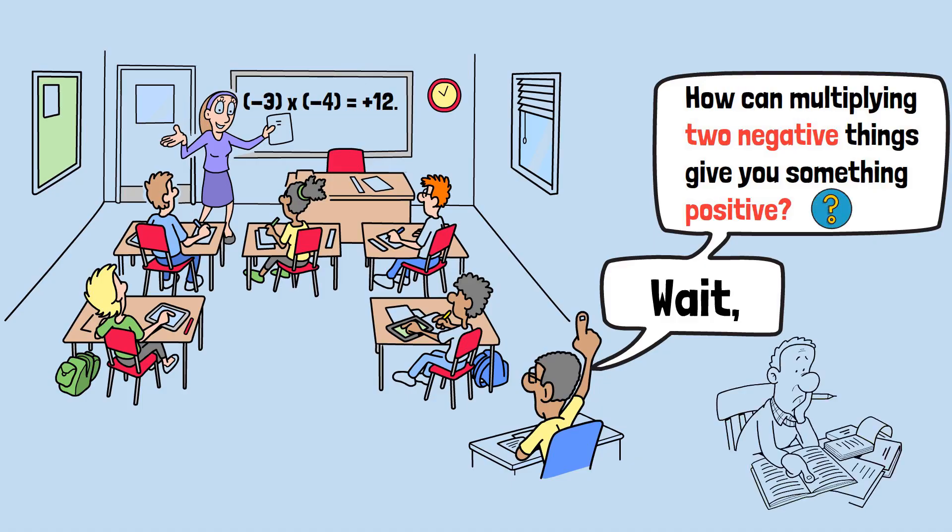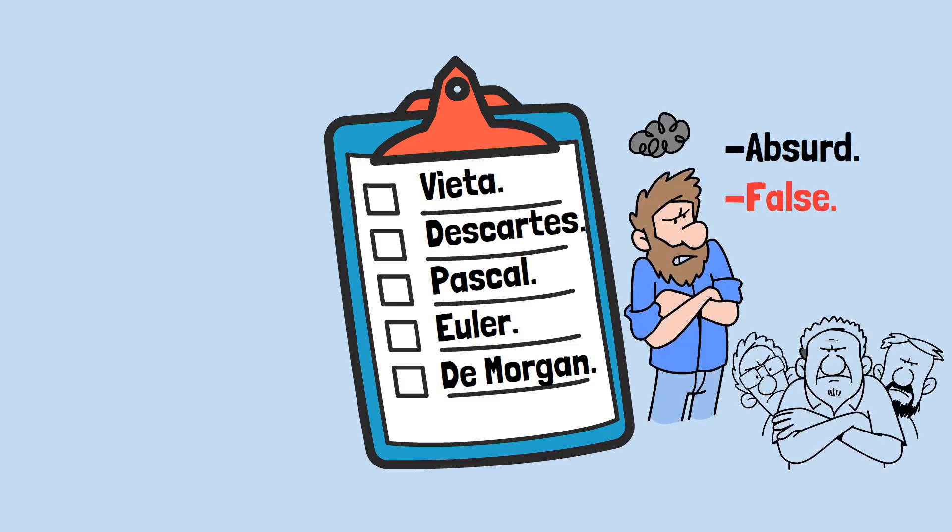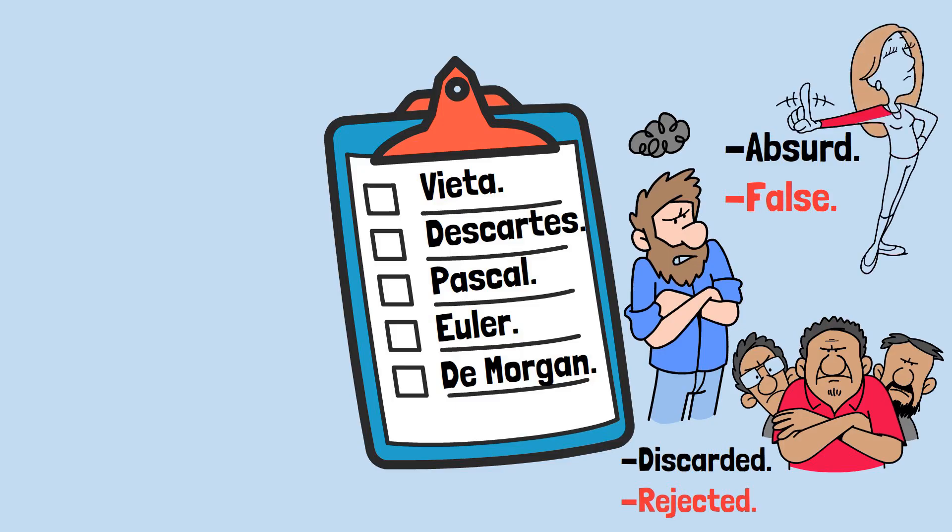If you've ever had this moment of mathematical confusion, you're not alone. In fact, you're in remarkably good company. Some of the greatest mathematical minds in history, including Vieta, Descartes, Pascal, Euler, and De Morgan, struggled with negative numbers so profoundly that they called them absurd, false, and argued they should be discarded and rejected entirely. So if you've ever struggled with this concept, don't feel bad.